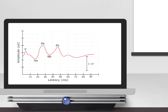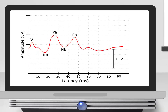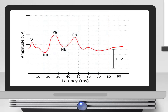In adults, the MLR comprises a complex waveform which follows the ABR in terms of latency and lasts up to around 80 milliseconds. The main components are the NA and the PA. The NA, which is thought to be primarily of subcortical origin, occurs around 15 to 20 milliseconds. The PA, which is thought to be of more cortical origins, occurs at approximately 25 milliseconds, and the PB another 25 milliseconds later.